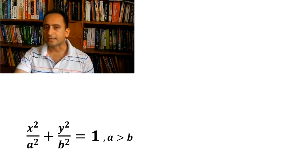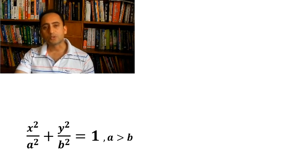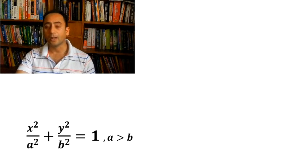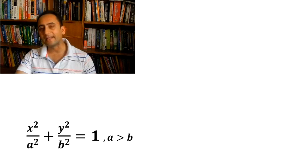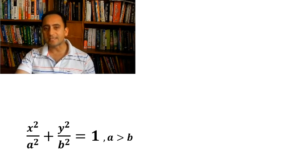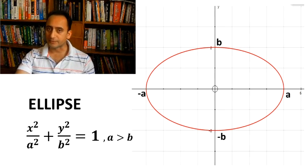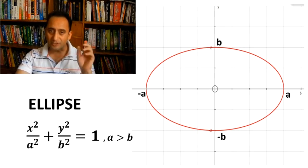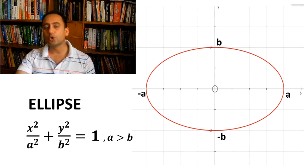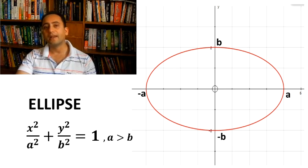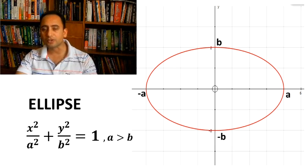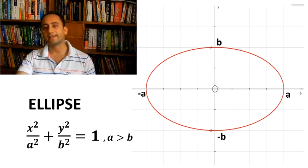The next equation is x²/a² + y²/b² = 1, where a is greater than b. This equation represents an ellipse whose major axis lies on the x-axis and the minor axis lies on the y-axis, and it is symmetric with respect to both axes.